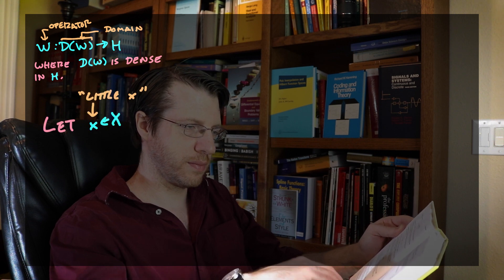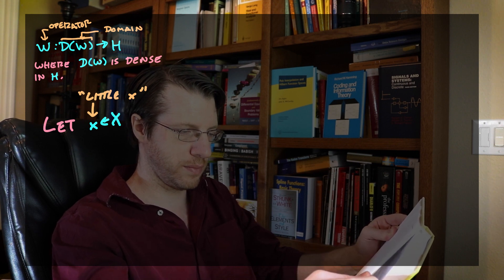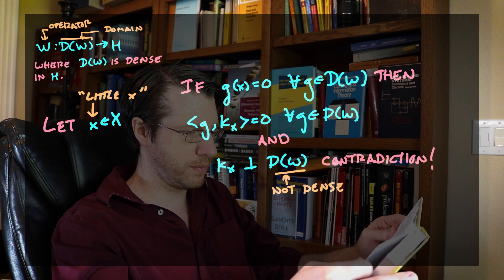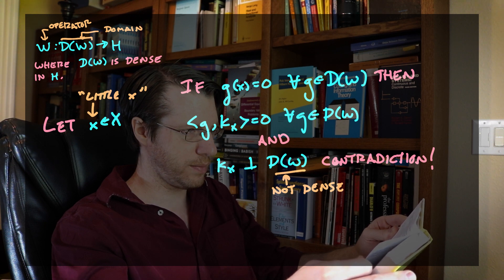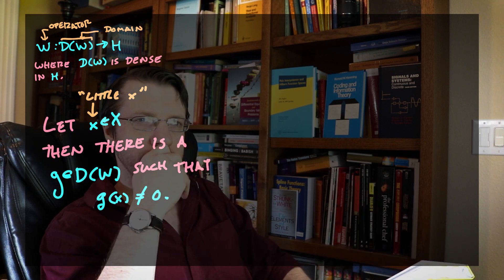We're going to use this idea to get properties of the domains of our densely defined operators. If we take a densely defined operator and its domain, then for any point x in the domain, there has to be some function in our domain that doesn't vanish there. Otherwise, our domain is going to be perpendicular to the kernel at that point, which means the domain itself can't be dense. That's a really important property, and I'm going to use it to get a characterization of the symbols of multiplication operators.